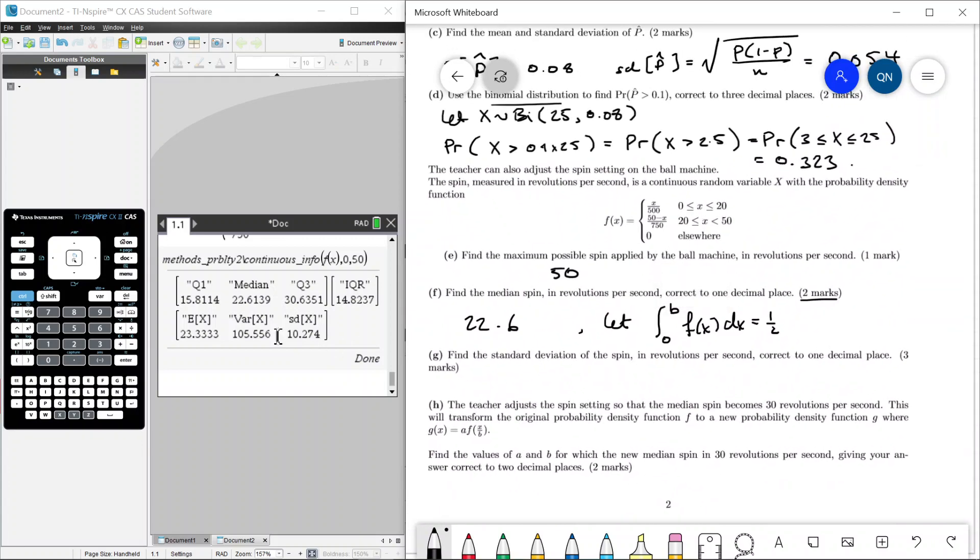Find the standard deviation of the spin. Well, here's the standard deviation just given to us for free. So this is 10 points, one decimal place. So this is 10.3.